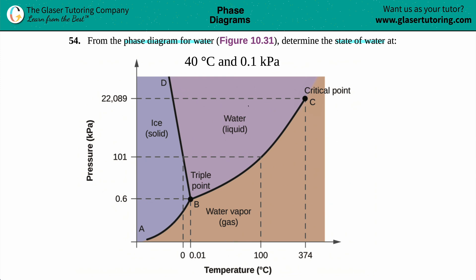This graph may seem a little scary, but I promise it's not. All we have to do is find where the points meet. The x-axis is degrees Celsius, the temperature, and the y-axis is the pressure in kilopascals (kPa).